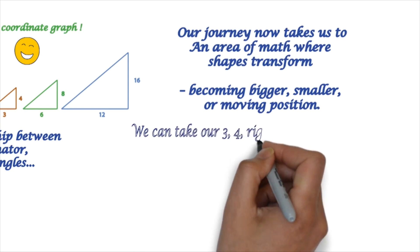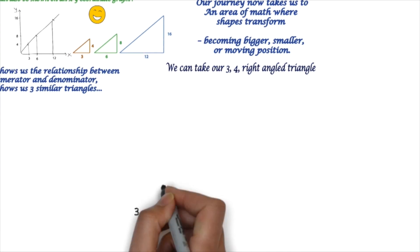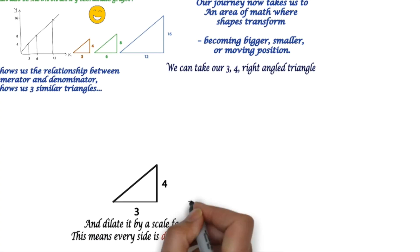So we can take our 3-4 right-angled triangle, which we'll draw again here, and dilate it by a scale factor of 2. This means that every side is doubled in length. We multiply each one by 2.